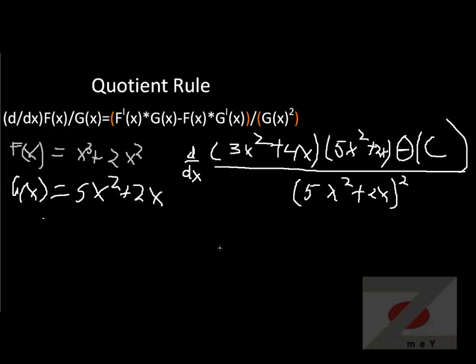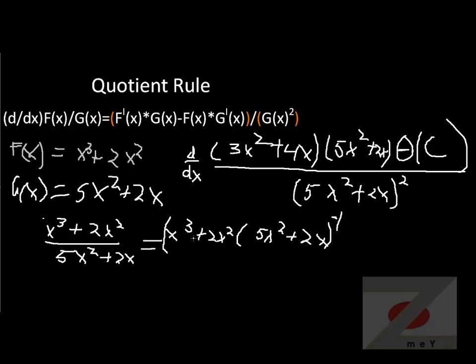It's useful to know quotient rule, but to be honest, I almost never use it. There's a trick that you can always make it a product rule. For example, if you have (x cubed plus 2x squared) divided by (5x squared plus 2x), this is the same as (x cubed plus 2x squared) times (5x squared plus 2x) raised to negative 1. This becomes more complicated and requires chain rule. But in most cases, many people use this instead of quotient rule. First, I have to cover chain rule before we can understand how it works.